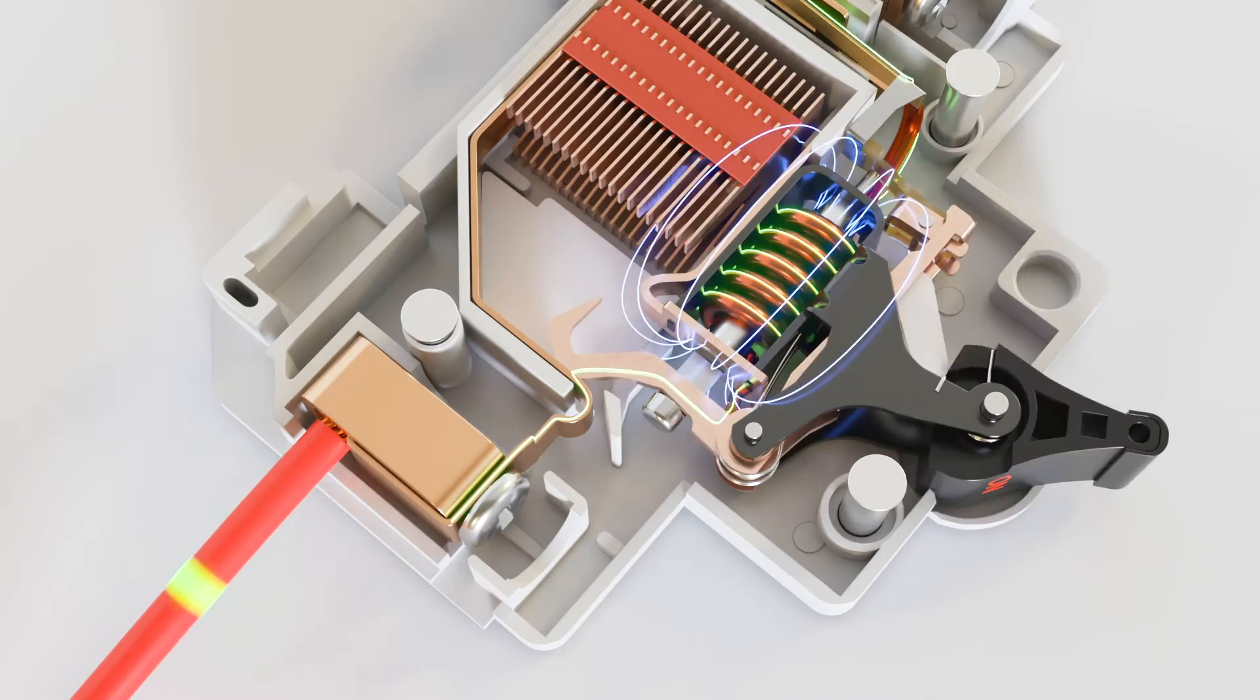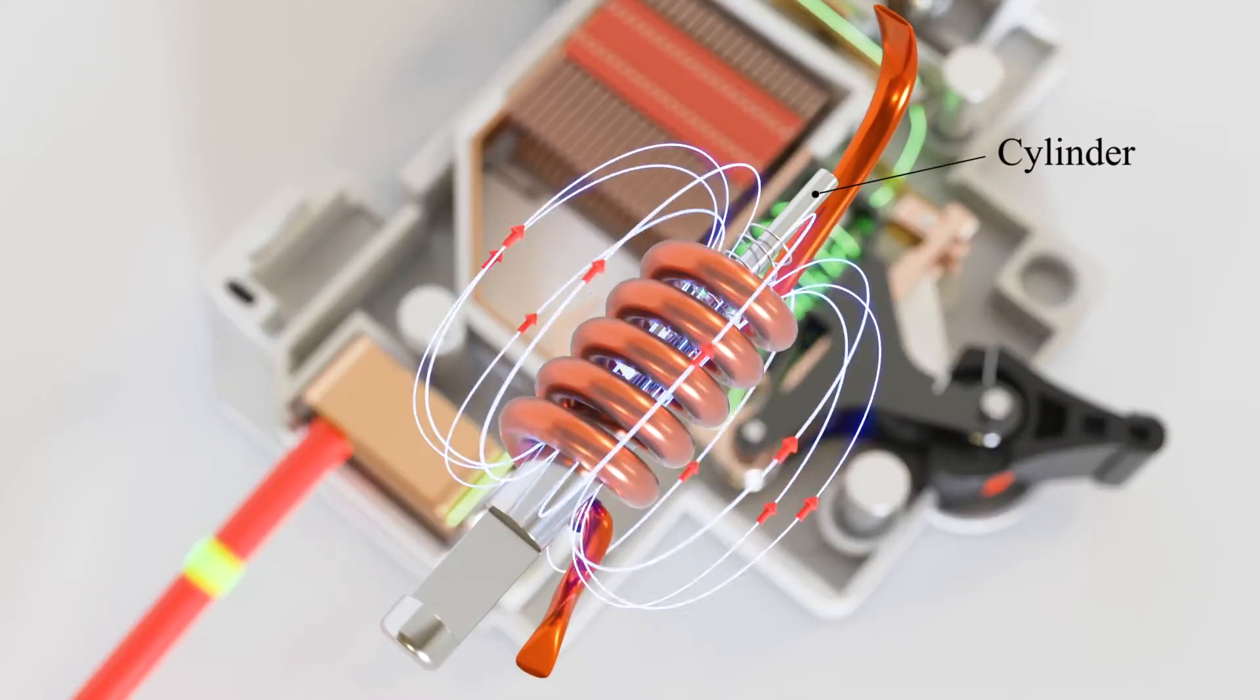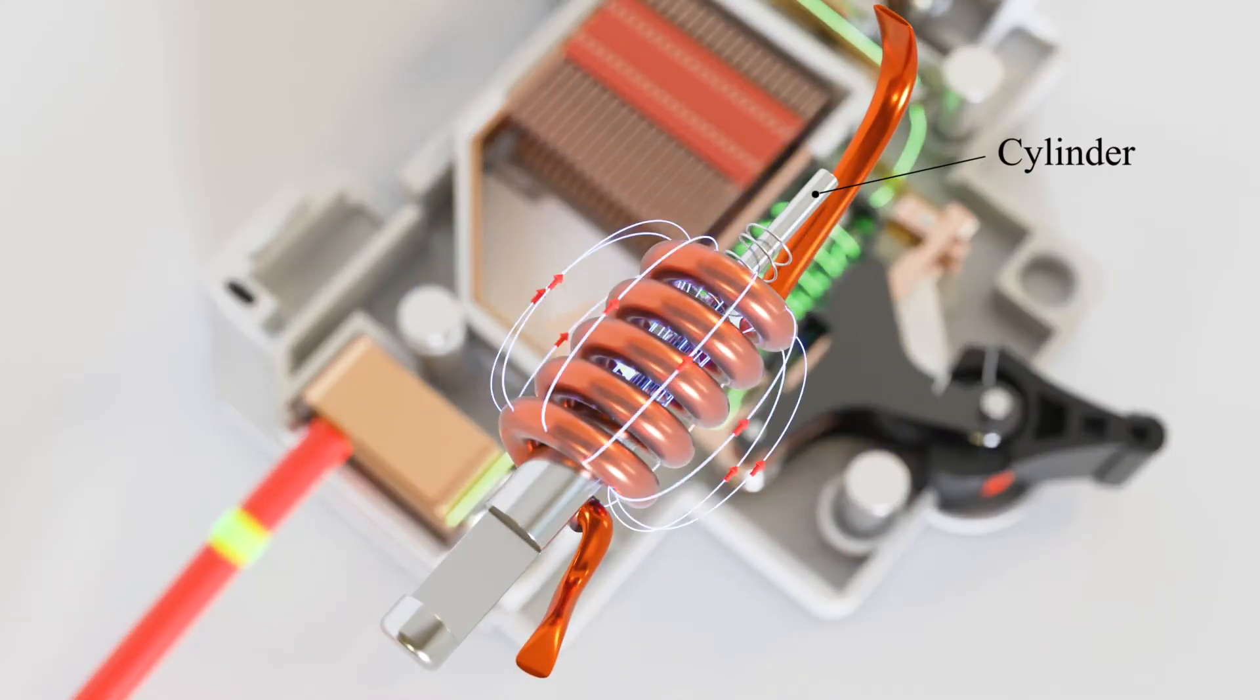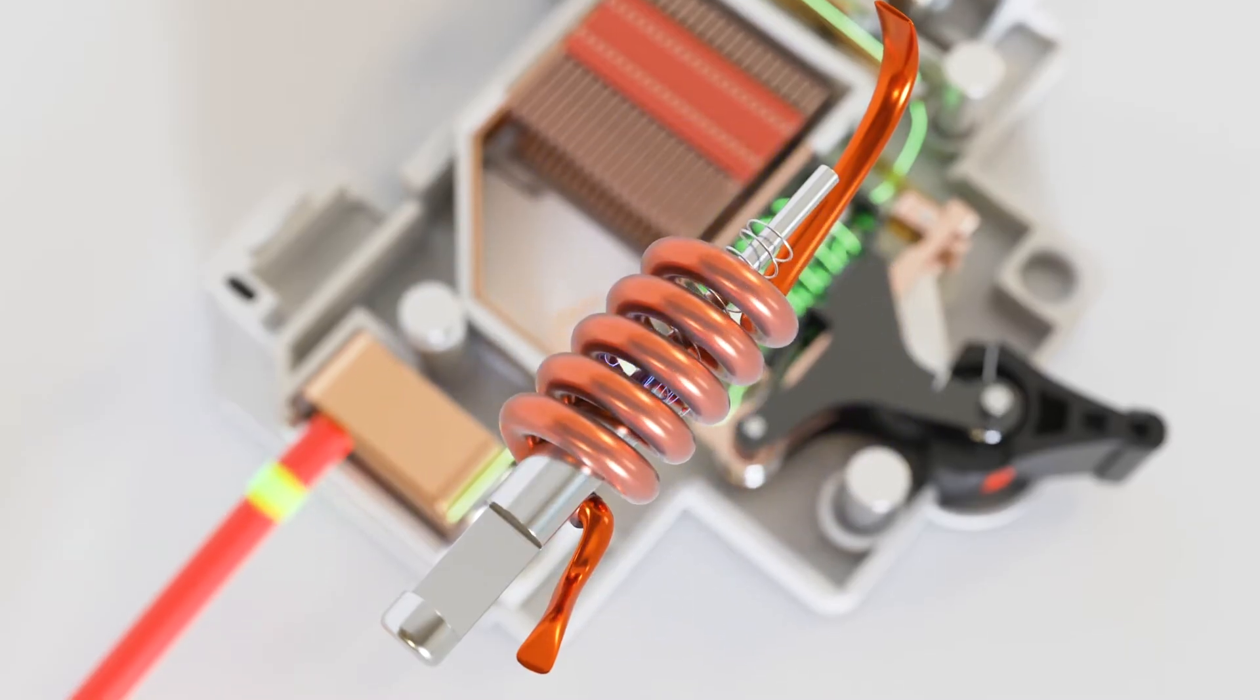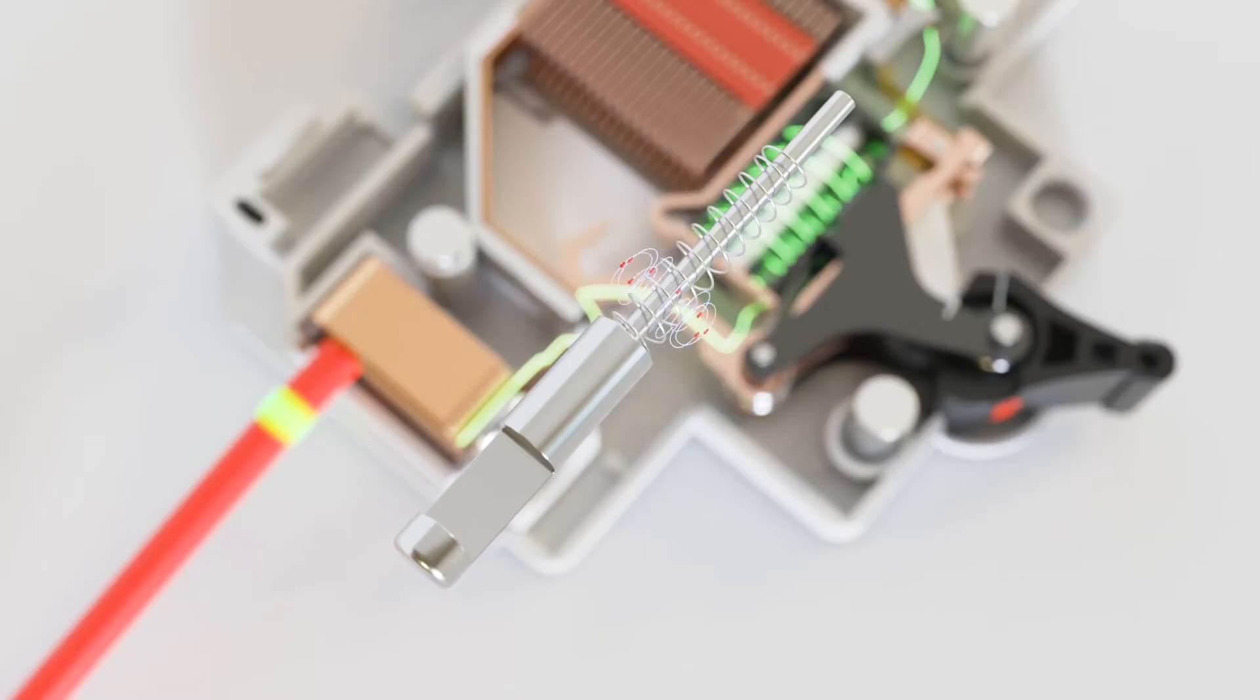When current passes through this coil, a magnetic field forms around the coil. As the current passing through coil is an alternating current, the magnetic field formed is also pulsating in nature. A cylinder made up of a ferromagnetic material is placed inside this coil. The magnetic field of the coil exerts a force on the cylinder due to a phenomenon known as electromagnetism.